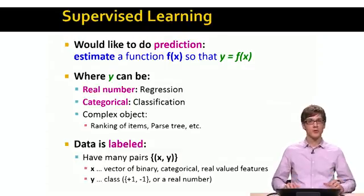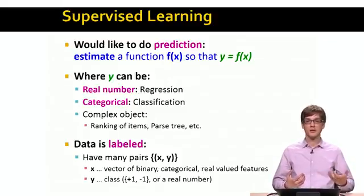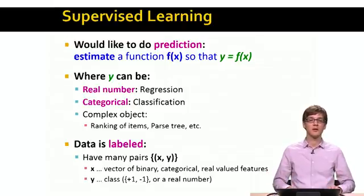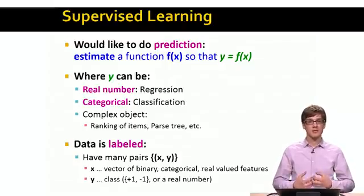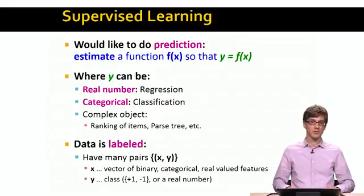And why do we call this whole thing supervised learning? Is because we think of our data as labeled. We are thinking that we are getting a set of many pairs, x and y, where x is the data that we are getting. And y is the variable or the class that we want to predict. So we can think of x as a vector of binary, categorical, or real valued features. And y as the class, let's say plus 1, minus 1, or a real number if we are working with regression. Basically we can think of x as a set of features representing our data point and y is the property of the data point we want to predict.